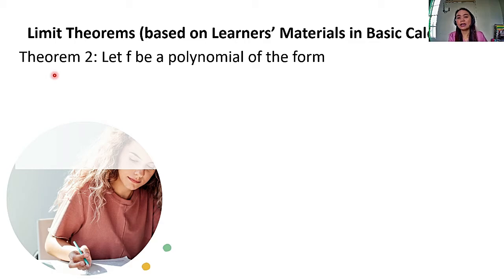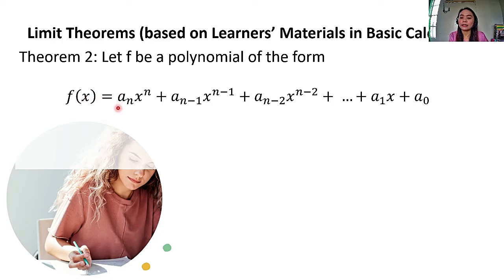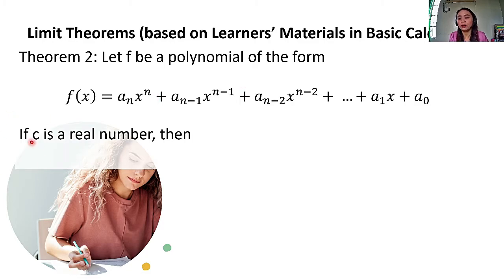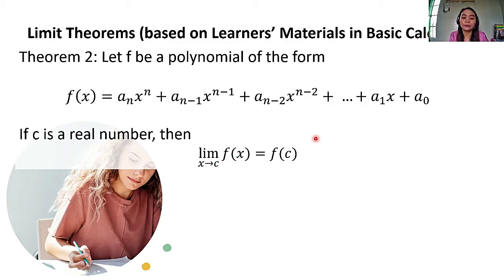Theorem number 2: let F be a polynomial of the form F of X equals A-sub-N times X raised to N plus A-sub-(N-1) times X raised to (N-1) plus A-sub-(N-2) times X raised to (N-2) plus up to A-sub-1 times X plus A-sub-0. If C is a real number, then the limit of F of X as X approaches C is equal to F of C — essentially, we just evaluate the function at the constant C.